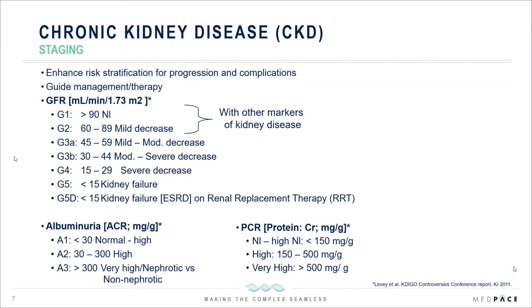There are five overall stages of CKD, with sub-stages as well. As staging progresses, so does the severity of kidney dysfunction in relation to GFR. Once GFR drops to less than 15, patients are labeled as being in kidney failure, and may require renal replacement therapy or dialysis — at which point we label them as ESRD. If the GFR is above 60% without other markers of kidney disease, we don't classify them as having CKD.